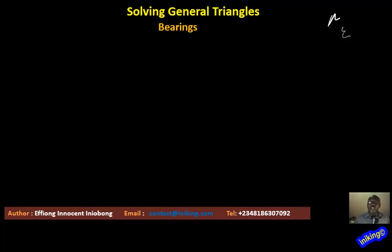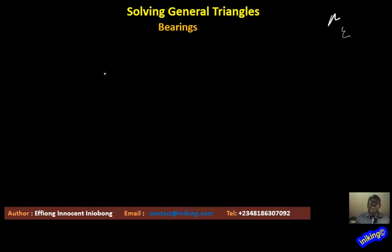Welcome to solving general triangles. In the next three video clips we'll be looking at a popular topic called bearings. We'll be looking at how to apply the sine rule, the cosine rule, and possibly Pythagoras theorem in solving problems that will result in a triangle. But first, what do we mean by bearings? A bearing is just a means of providing or describing direction from one point to another — you can see it as a coded language when you want to describe the direction of one point from another point.